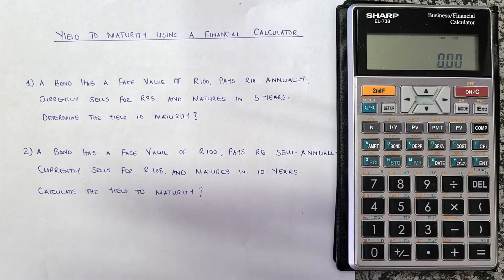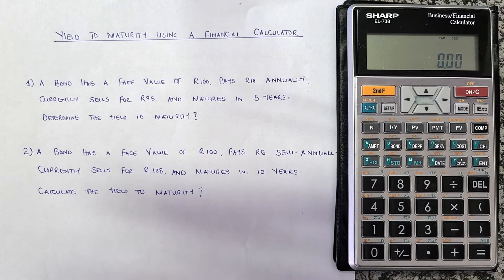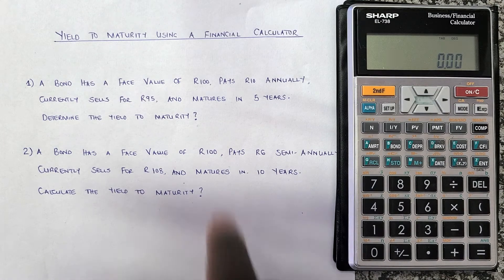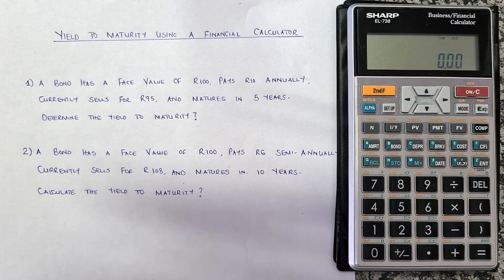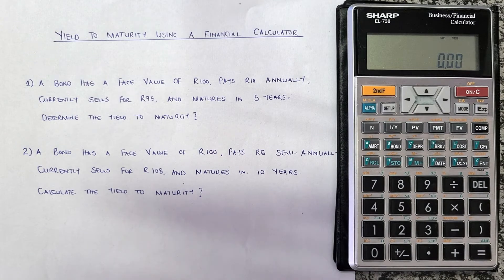Let's look at the first example. We are told that a bond has a face value of 100 rand, pays 10 rand annually, currently sells for 95 rand, and matures in five years — determine the yield to maturity. The face value of 100 rand is what the bondholder will receive when the bond matures, so that becomes our future value. The 10 rand paid annually is the coupon, which is our PMT. The 95 rand is what the bondholder pays today, so that is our present value. Five years is the number of periods.